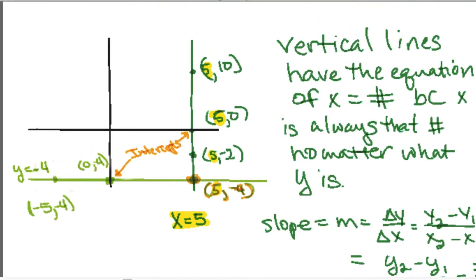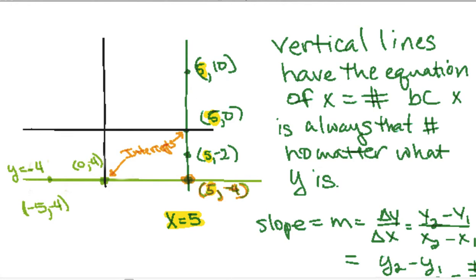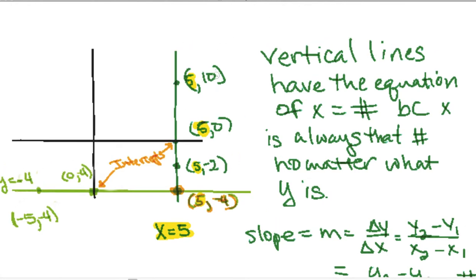So if the question is what is the equation of the vertical line that goes through the point five comma ten, you would just write down x equals five. Or five comma zero would be x equals five, because the value of the x in your ordered pair is the equation of the line, x equals five.